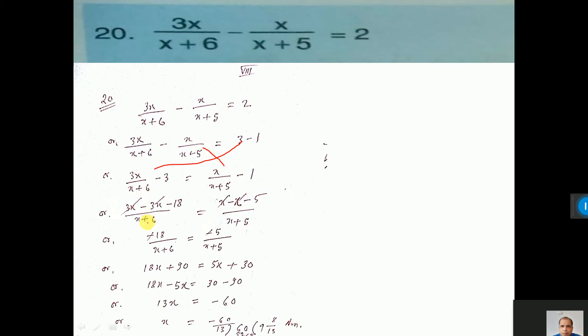Now if you do LCM, x plus 6, 3x is there, 3 into x, 3x minus 3, 6 are 18. Then x minus x minus 5. xx cut. Here 3x, 3x cut. So what is left? 18 by x plus 6, 5 by x plus 6.